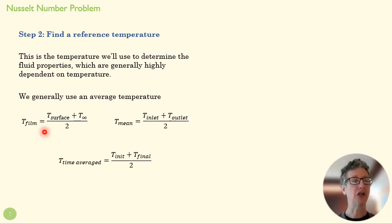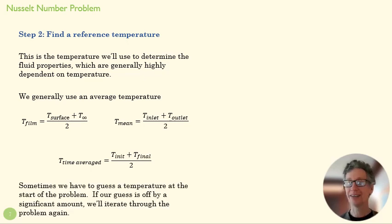In an external flow situation where I have a T infinity and a surface temperature, I can figure out the temperature in the film, the place where things are actually happening between the surface and that flow far away from the surface. I can find a mean temperature of pipe flow by looking at inlet and outlet temperature. And if I have a time dependent problem, I can look at my initial temperature and a final temperature. Sometimes we have to guess.